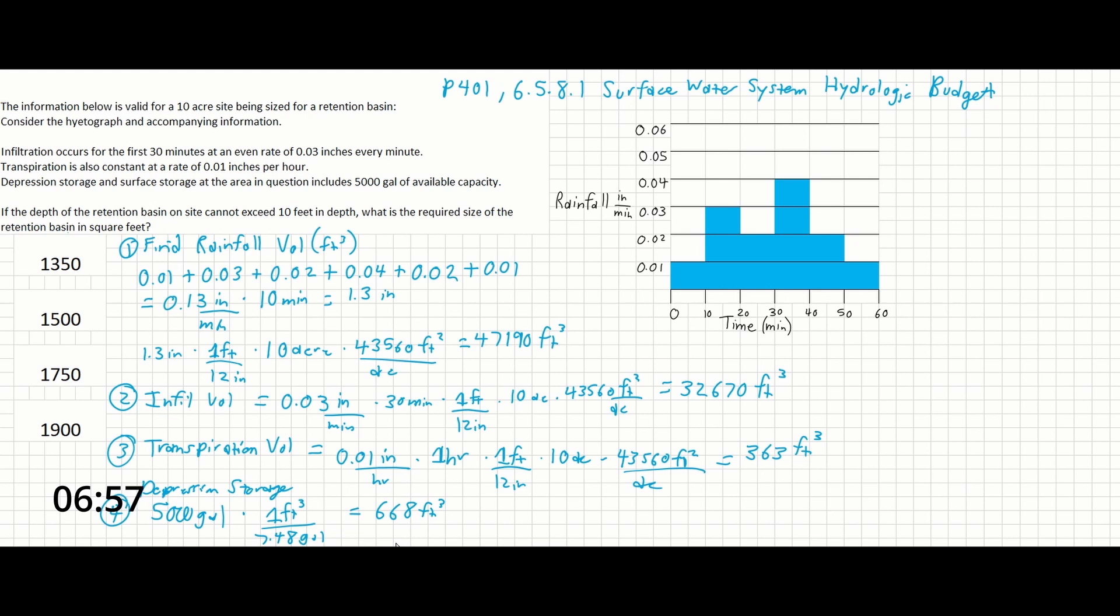So from there, what we have is our rain volume, and that's a positive number. And then we're subtracting out infiltration, we're subtracting out transpiration, and we're subtracting out depression storage.